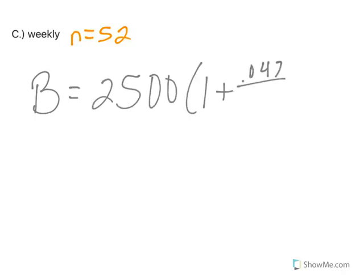Oh, why didn't I make that orange? 52, there we go. Okay, and then we take it to the 52 times 1 power, because, again, it's one year. So 52 times 1 is just 52. Throw that in your calculator.